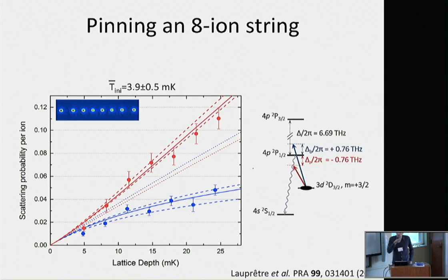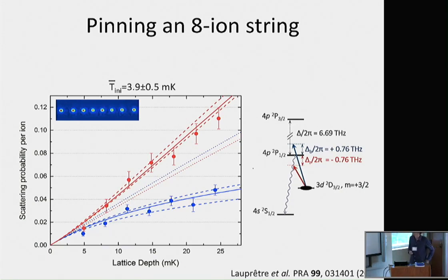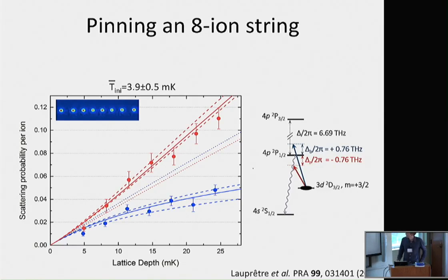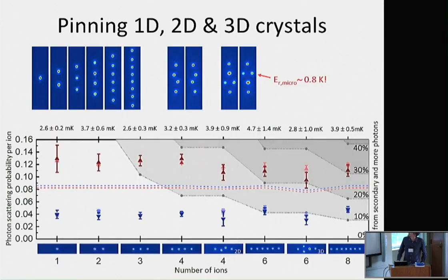We also did experiments with more ions — for instance making a string of eight ions and applying this optical potential. We observe the scattering from the lattice and again see the same kind of asymmetric scattering behavior whether detuned to the red or blue of the transition, showing that we pin all eight ions simultaneously near the potential minima. We did this also for various crystals — various strings of ions up to eight ions — but also with multidimensional crystals: a zigzag crystal (a 2D chain of ions) or even a 3D crystal.